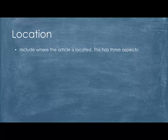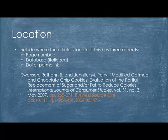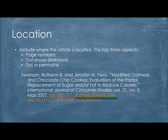Finally, you have the location. Include where the article is located. This has three aspects: page numbers, database — which will also be italicized — and the DOI or permalink. In this case, our journal article is located on pages 265 to 271. Notice that you put 'pp.' followed by a period before the page numbers. It came from the database Business Source Elite, and we've included the DOI.